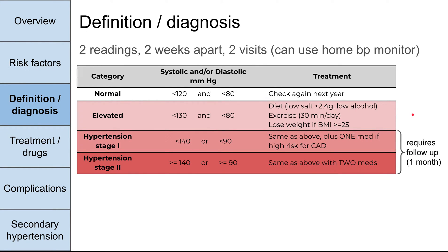Next are hypertension stage 1 and stage 2, both of which require follow-up after diagnosis. Hypertension stage 1 is up to 140 systolic and up to 90 diastolic. The treatment is diet, exercise, and weight loss for everyone, plus one medication if you're at high risk for coronary artery disease. Coronary artery disease risk factors include obesity, hyperlipidemia, and diabetes. You can calculate your risk using an online calculator, and if it's above 10%, you need to be on a medicine if you have stage 1 hypertension.